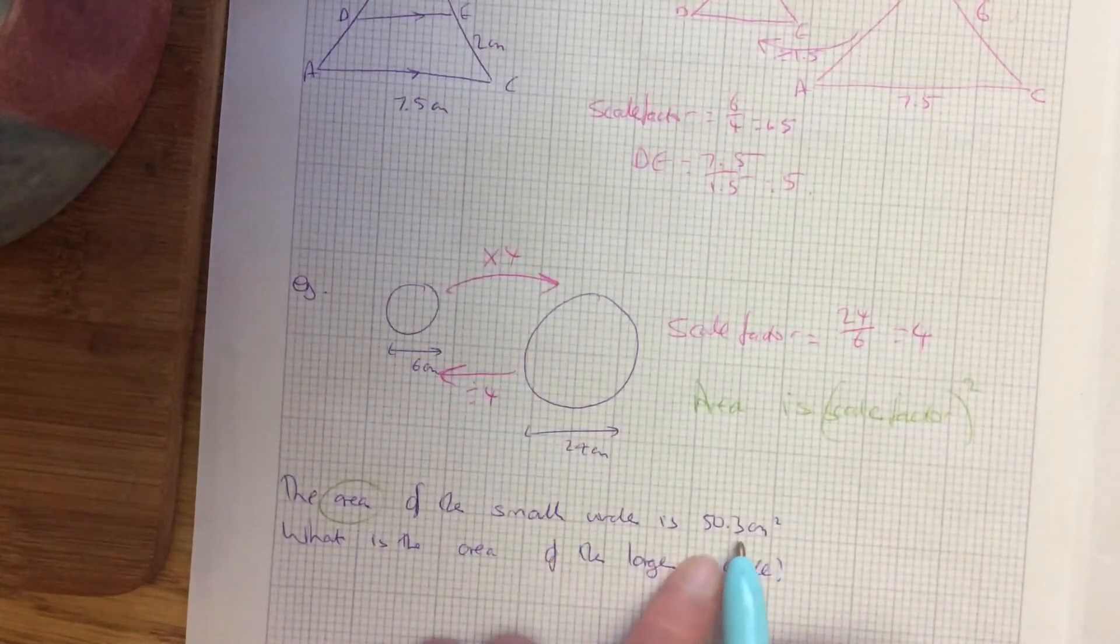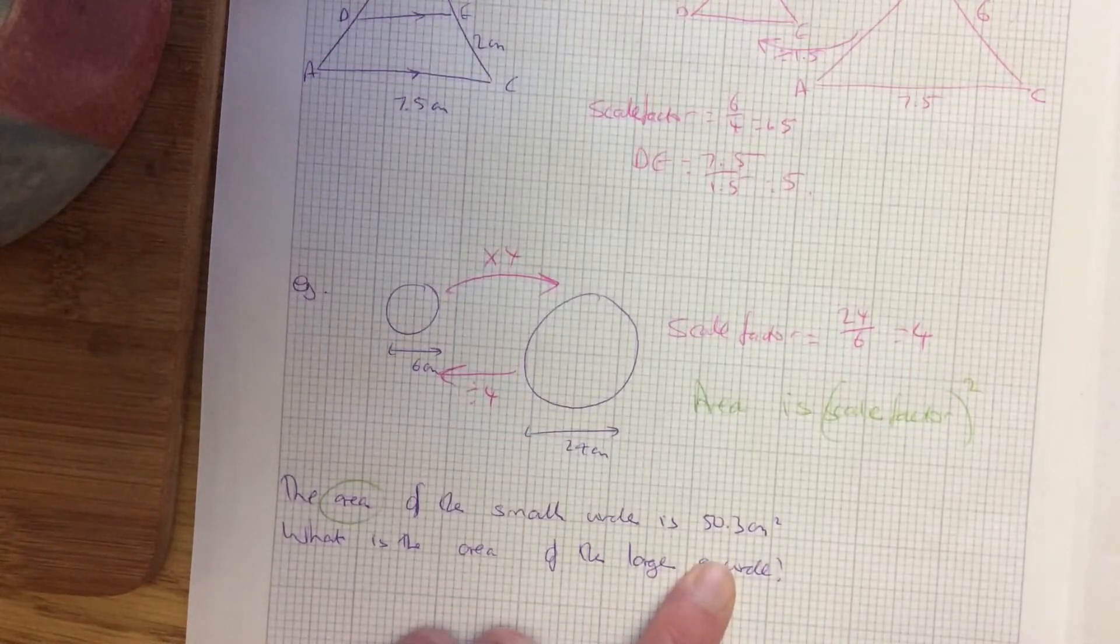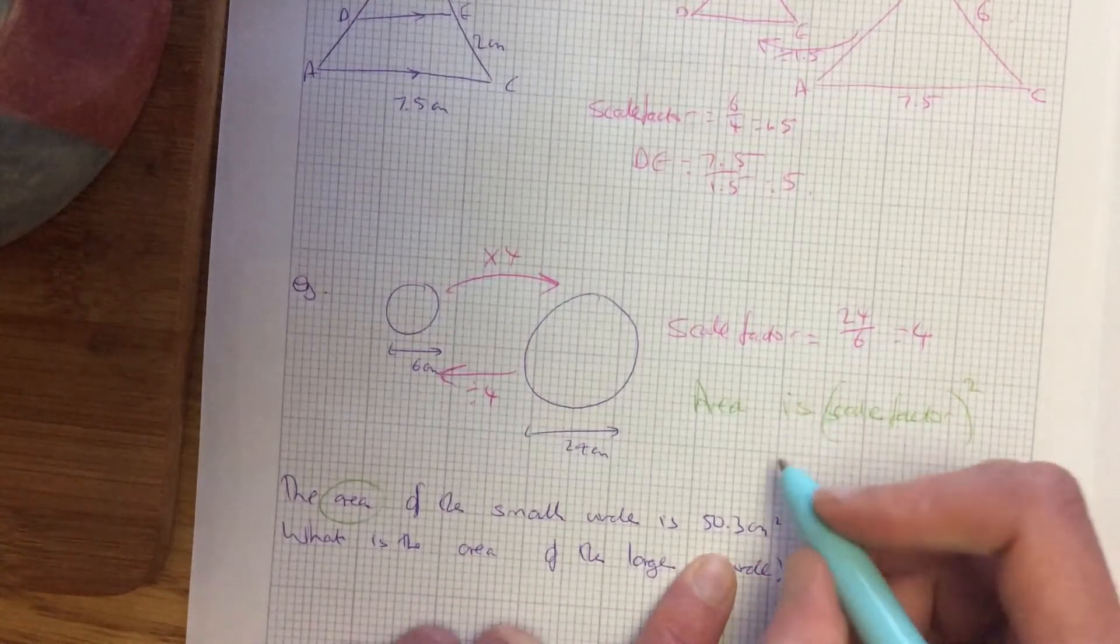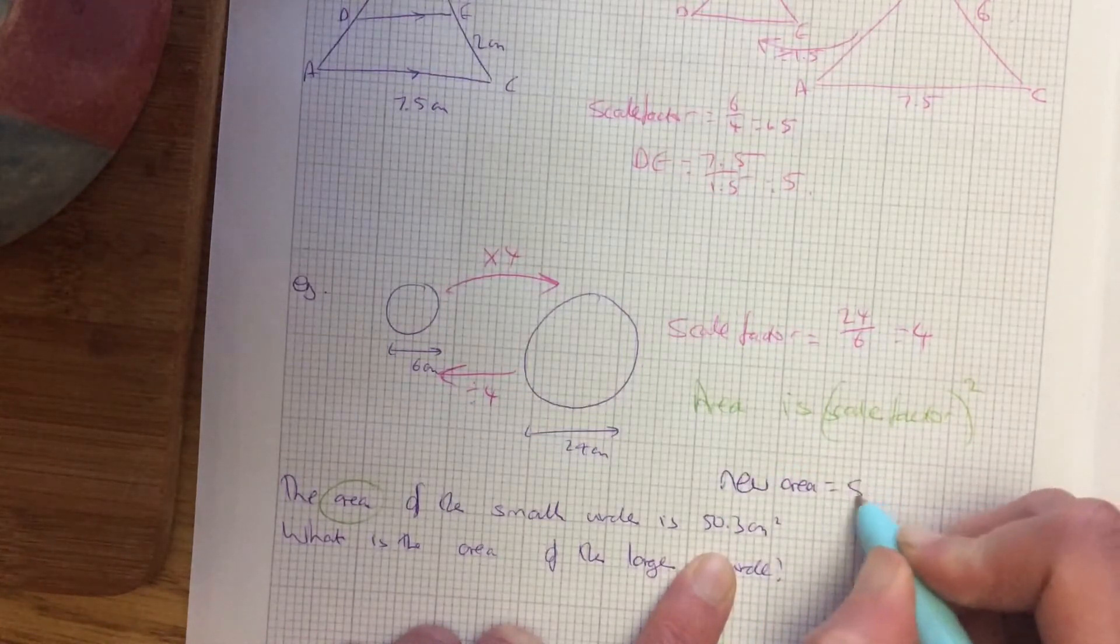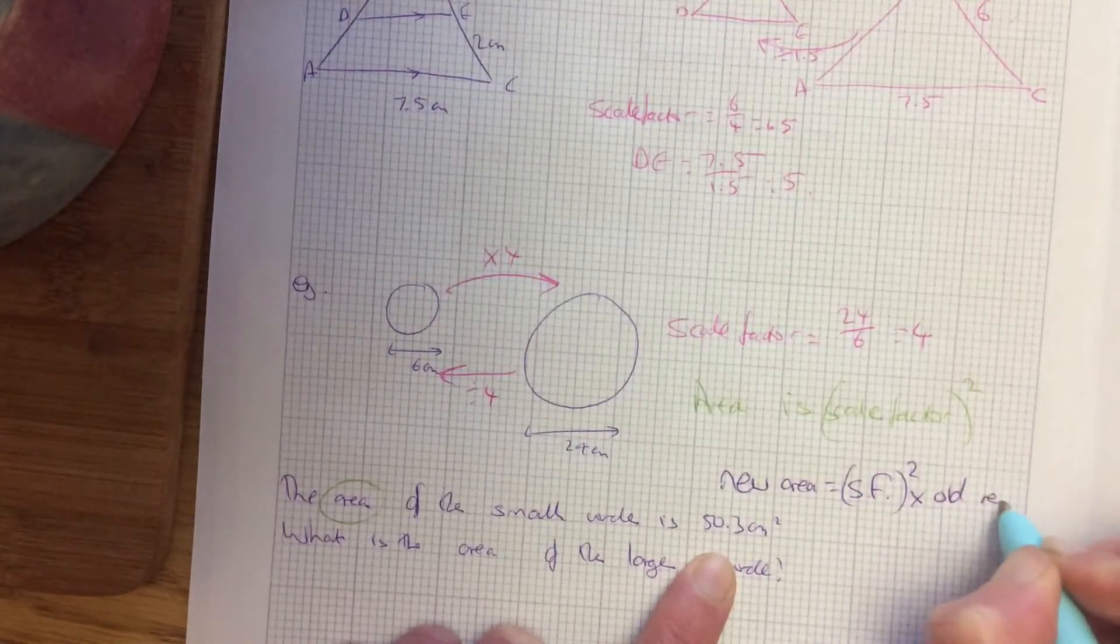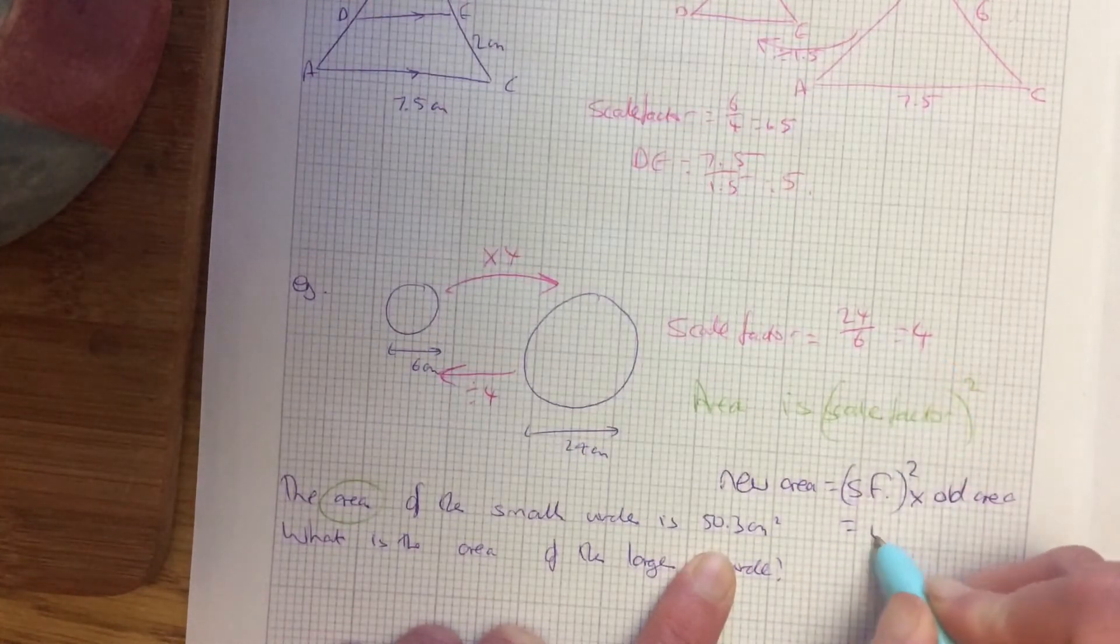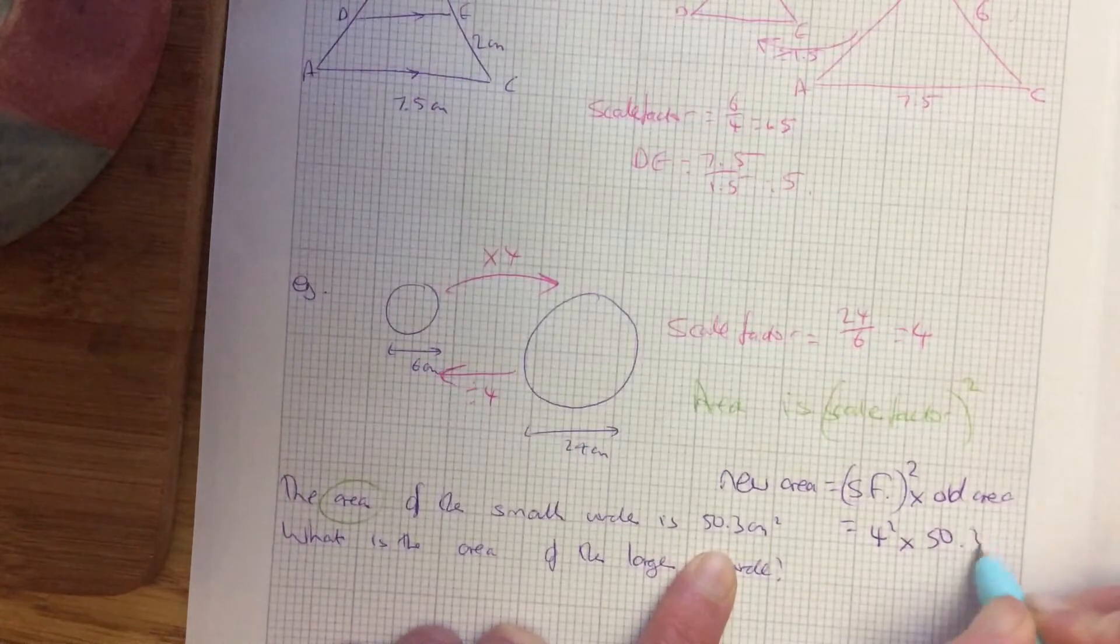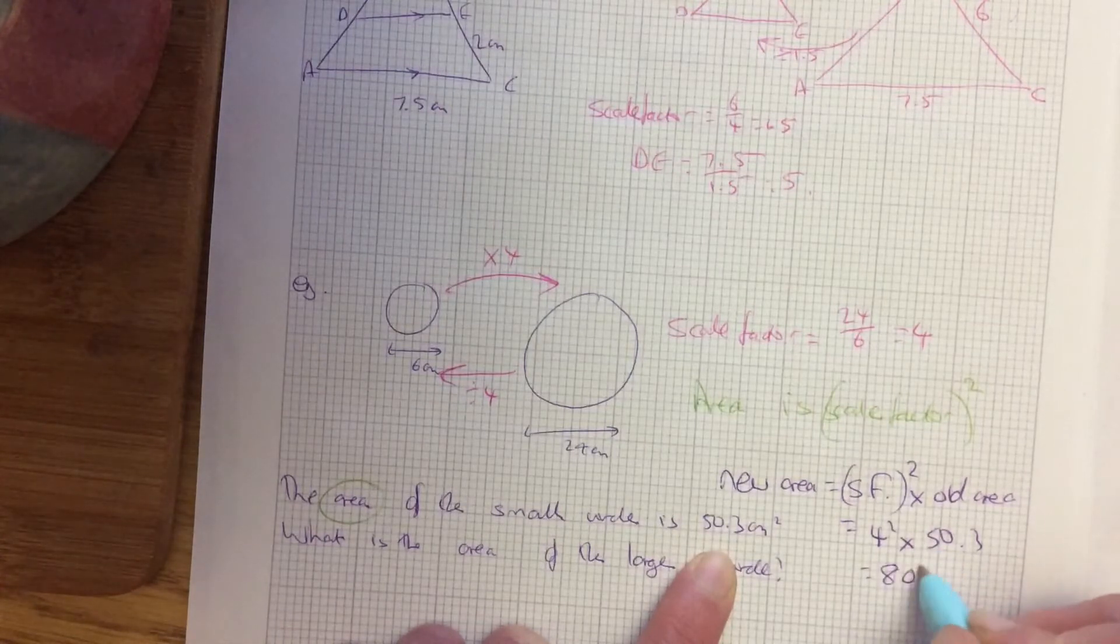Now you're told the small circle and it wants you to work out the area of the large circle. So what you're going to do there is your new area is your scale factor squared times the old area. So your scale factor is 4 so it's 4 squared times 50.3. So 16 times 50.3 gives you an answer of 804.8 centimeters squared.